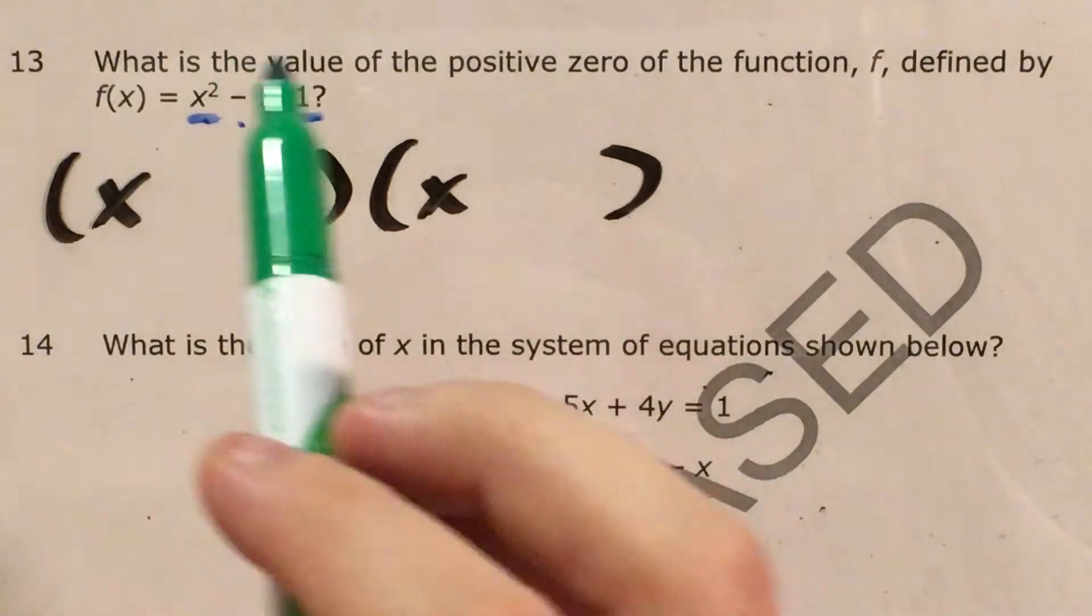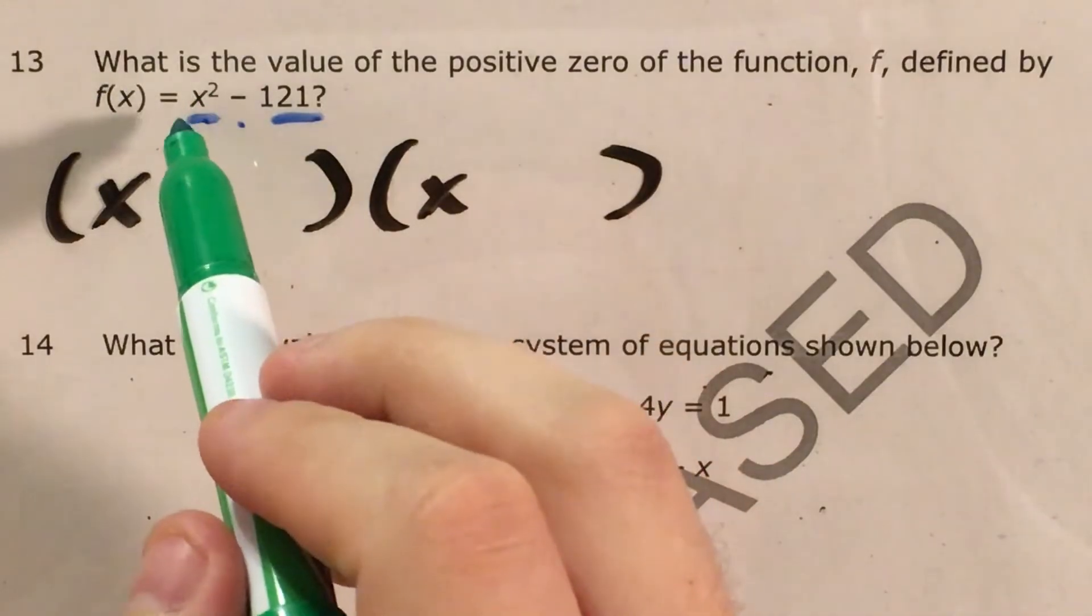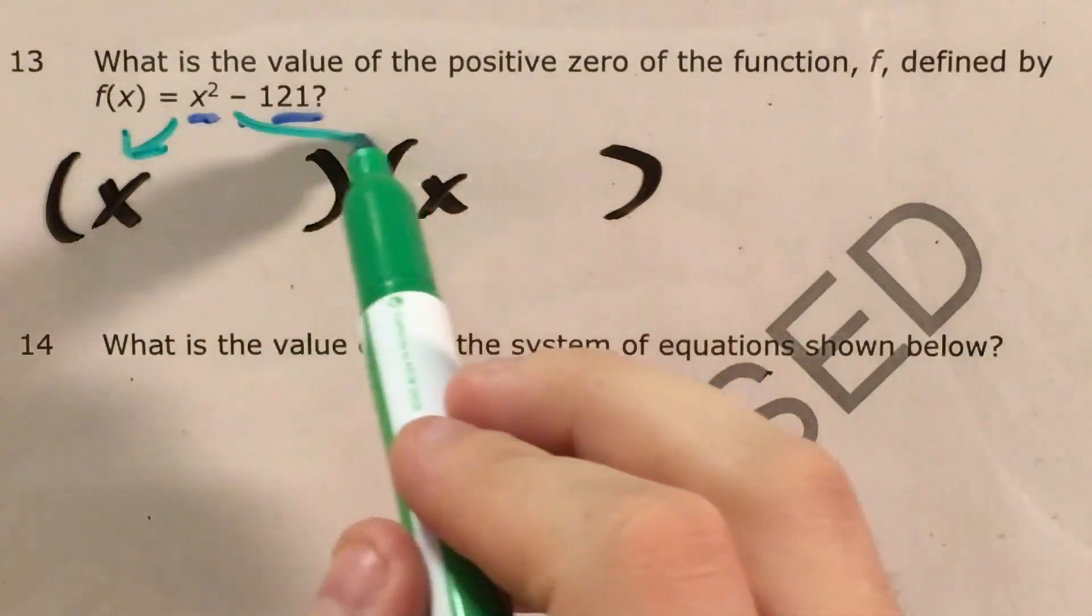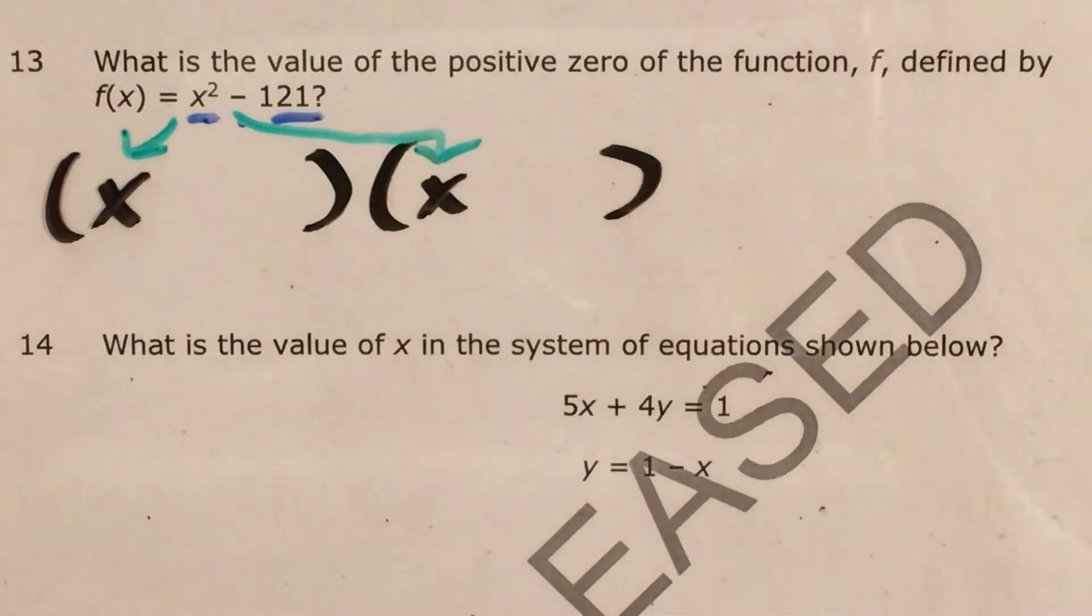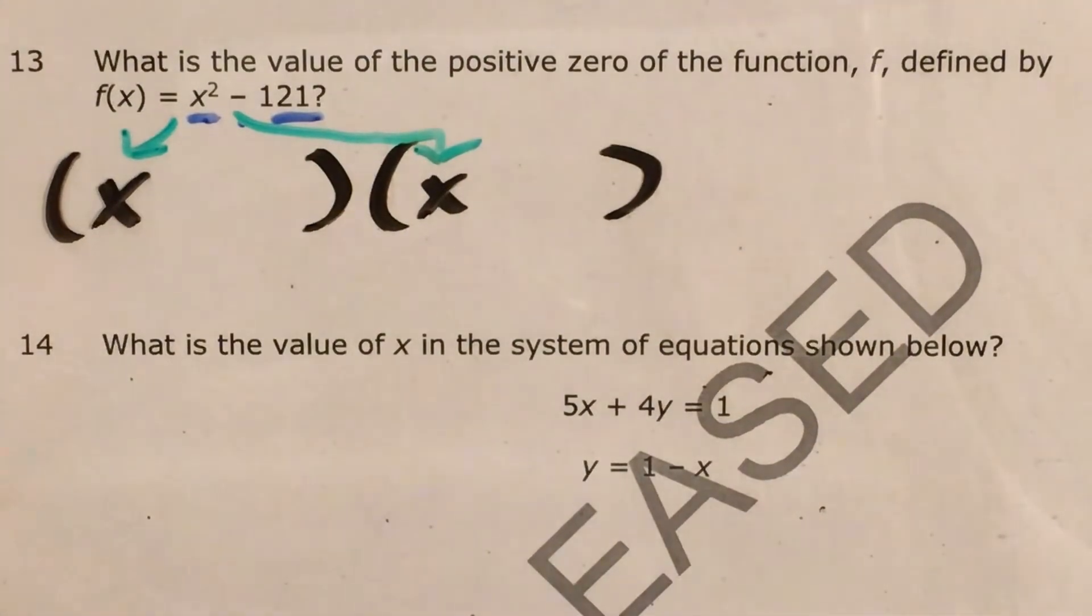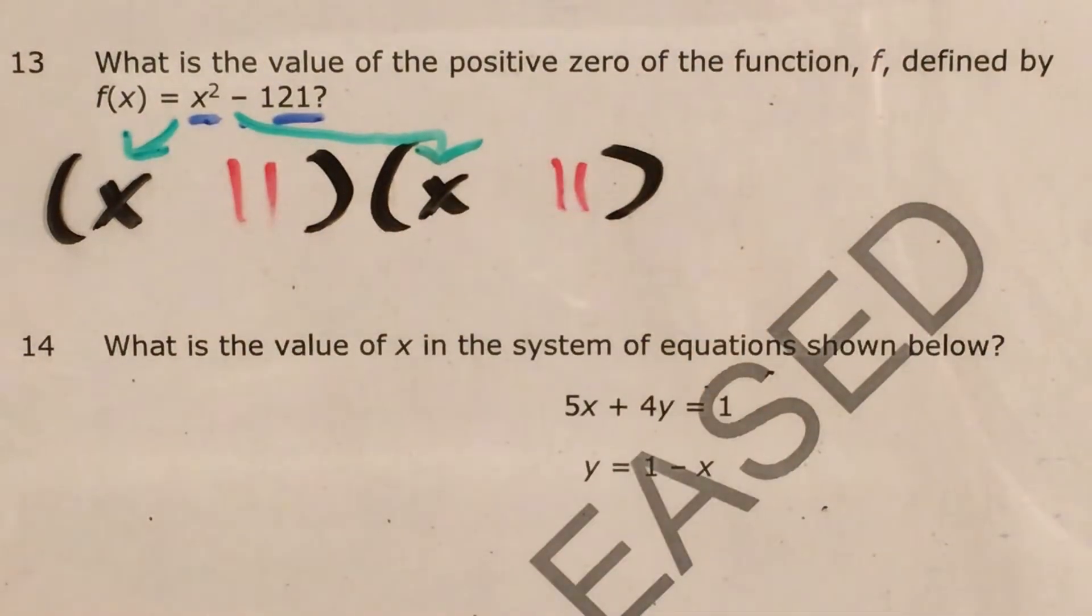So basically what I'm going to do is I'm going to take the square root of the left side, so the square root of x squared is just x, and now I take the square root of the right side. The square root of 121 is 11, and 11 is going to go on the right side of each of these parentheses, but in the middle I'll have plus in one set and minus in another set.